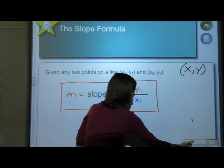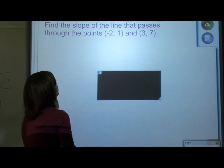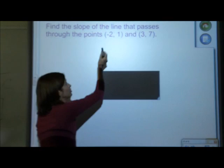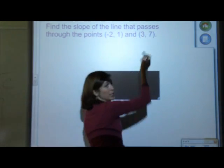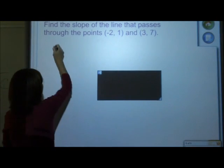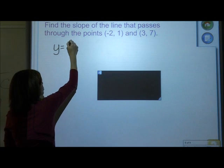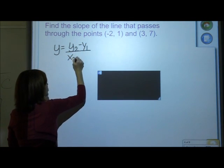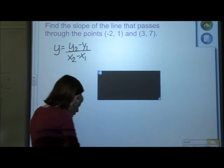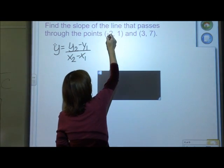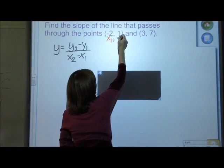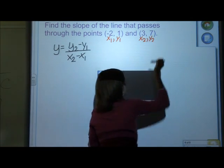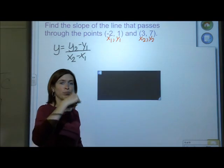All right. So we're going to use the slope on an example. Your first example is find the slope of the line that passes through the points negative 2, 1, and 3, 7. So we take our slope formula. y equals y2 minus y1 over x2 minus x1. I'm going to get on labeling the points. So I'm going to label this one x1, y1, x2, y2.